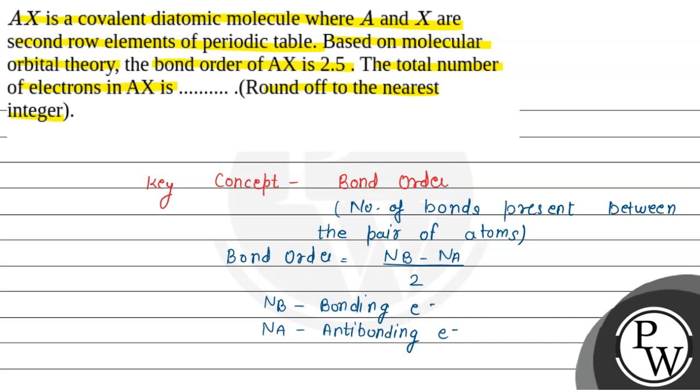Here we have a question given that A and X are two covalent diatomic molecules in the periodic table. In this case, the bond order is 2.5.